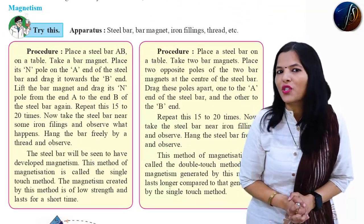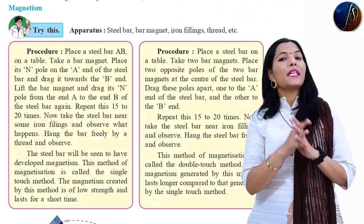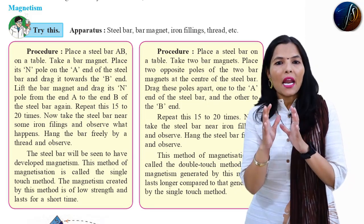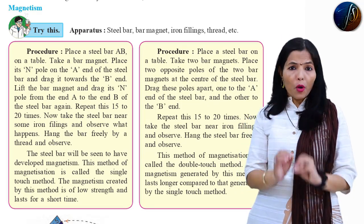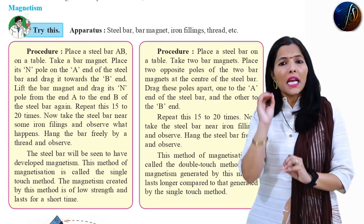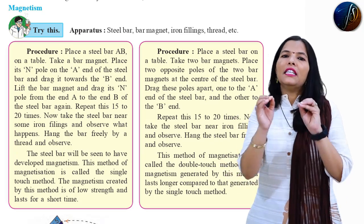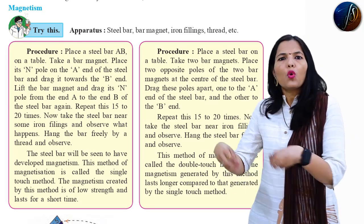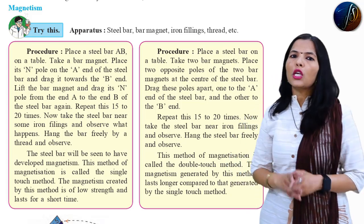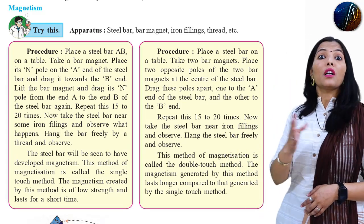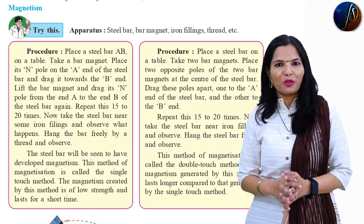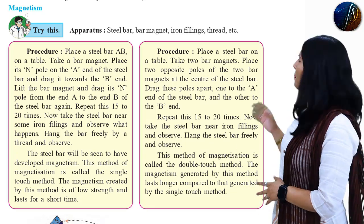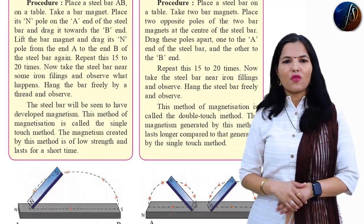So students, what is today's topic? Today's topic is magnetism. We can produce magnetic property temporarily in other metals — this type of property is called magnetism. We can do magic, as shown in your textbook, page 126.